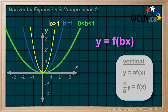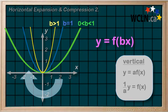And we'll note that similarly, a negative b indicates that we have similar expansions and compressions, but with a horizontal reflection involved as well.